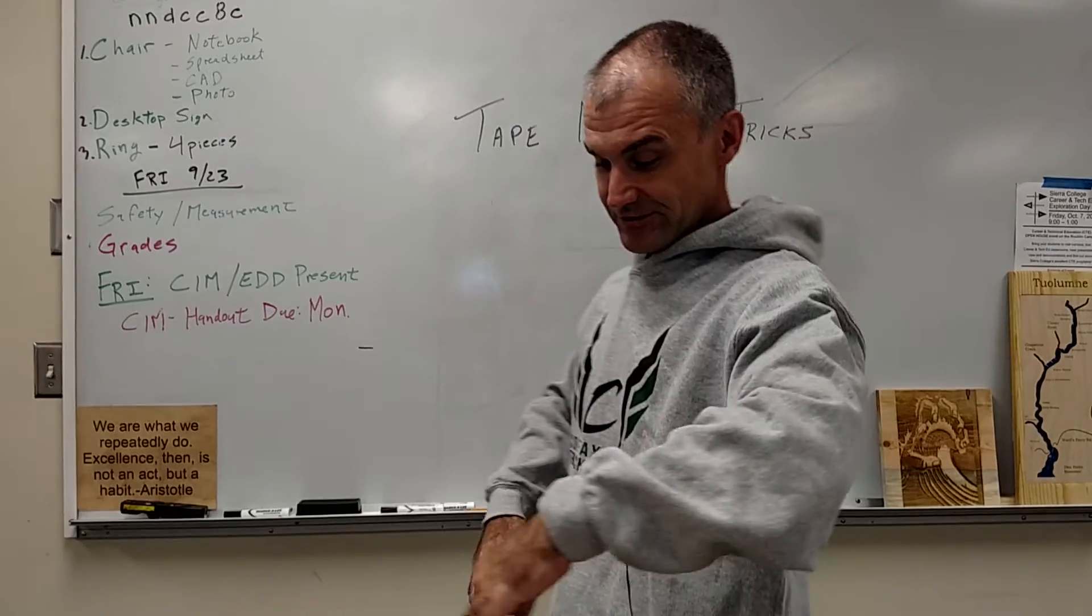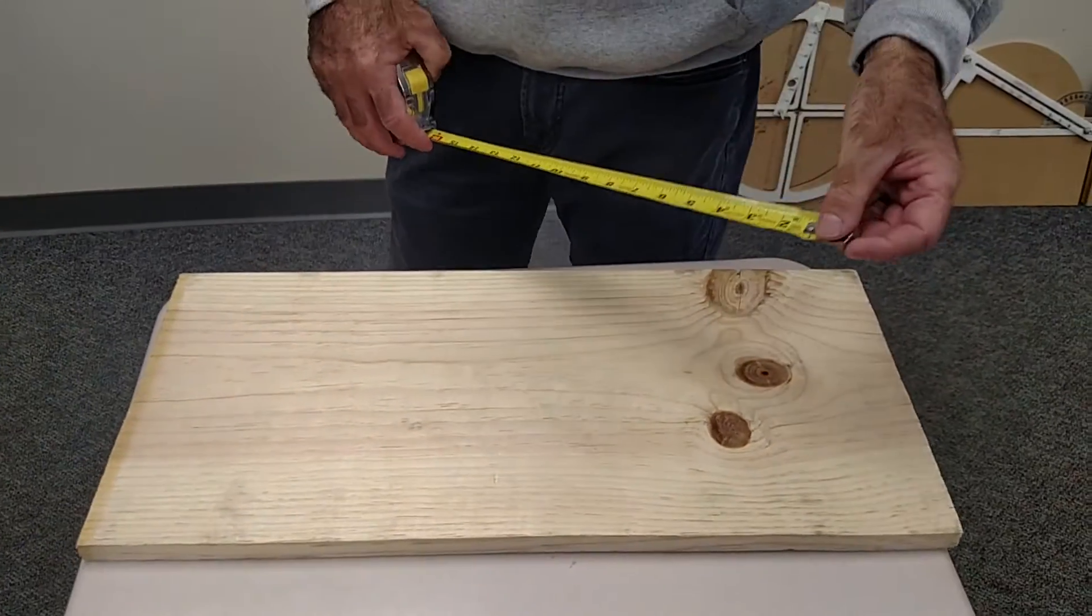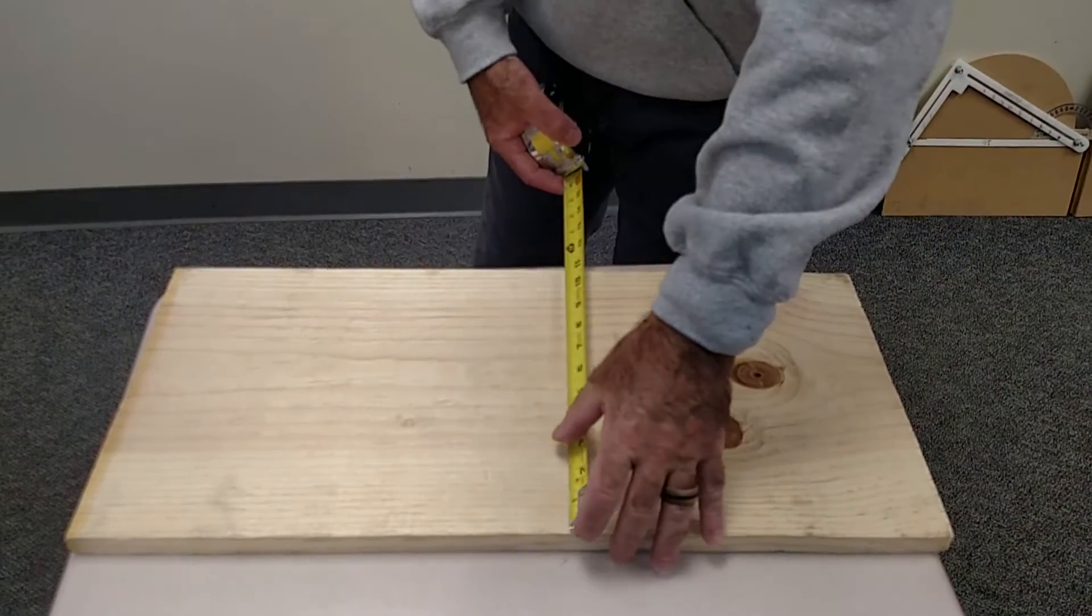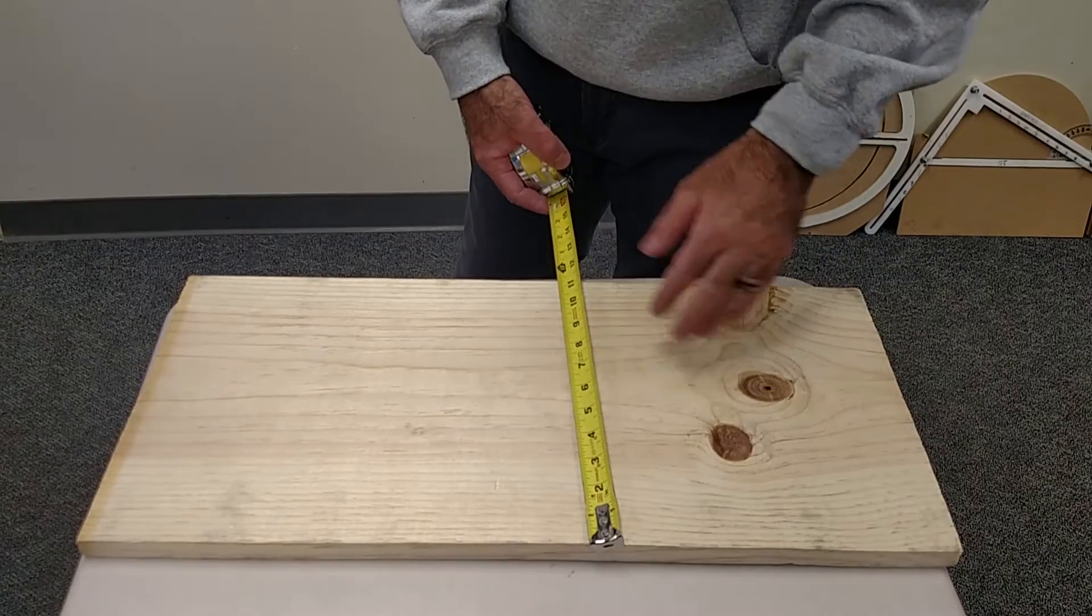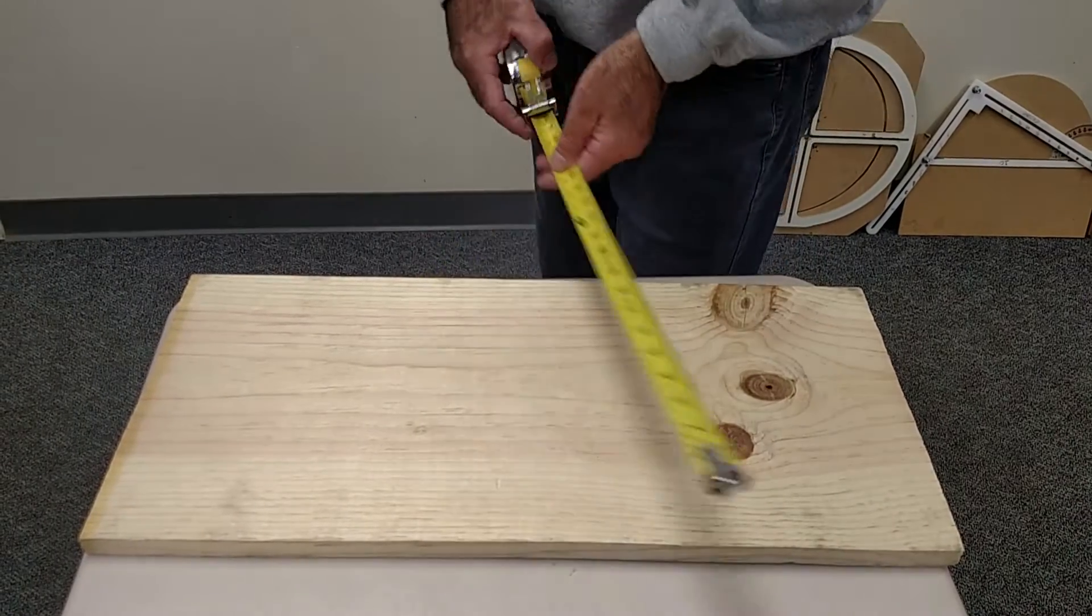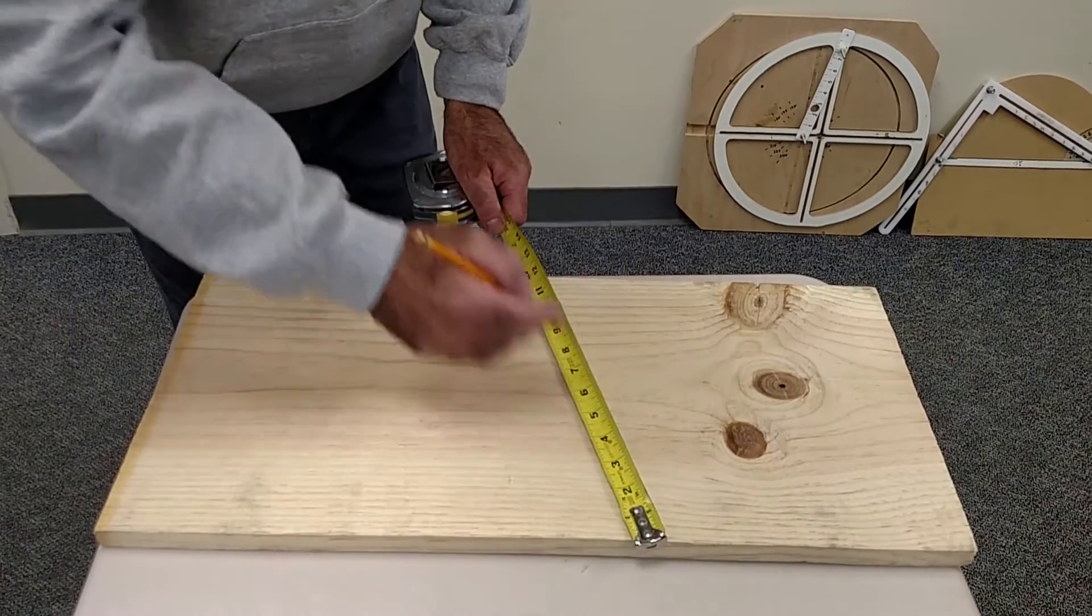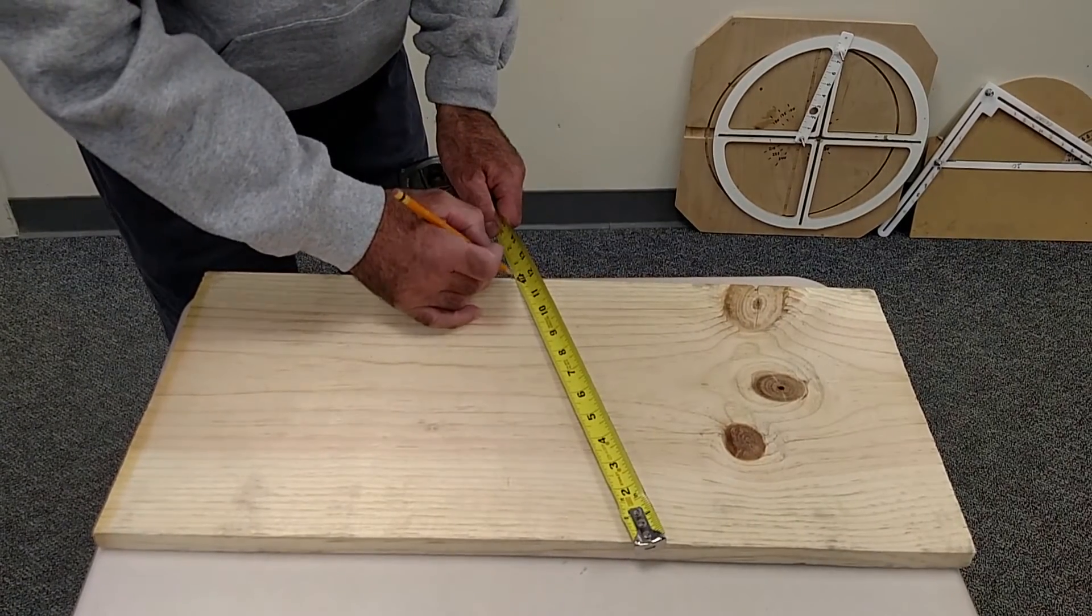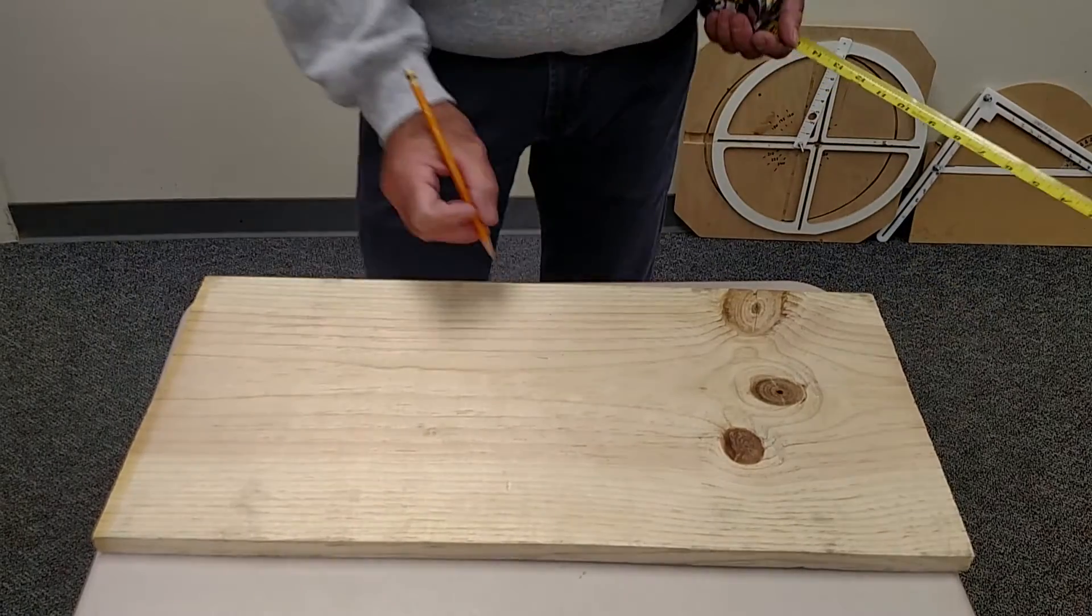And then the fourth trick is if you want to divide things three ways, you could do that. This board is actually 11 and a quarter wide. If I want to divide it into three equal parts, I'll just open it up and move it until it's set at 12. And I'll divide 12 by three to get four and eight. And then that's three equal parts.